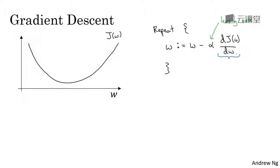When we start to write code to implement gradient descent, we're going to use the convention that the variable name in our code dw will be used to represent this derivative term. So when you write code, you write something like w equals, or colon equals, w minus alpha times dw. So we'll use dw to be the variable name to represent this derivative term. Now,